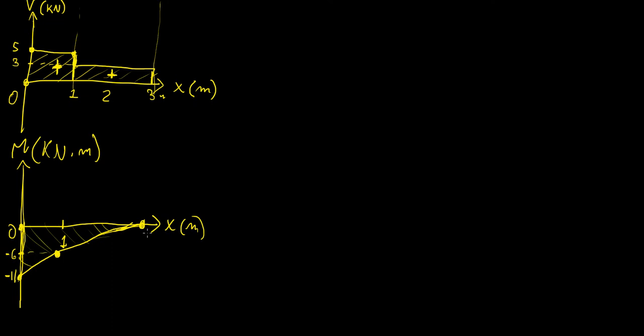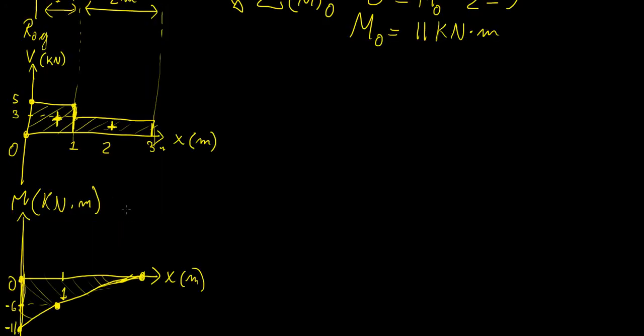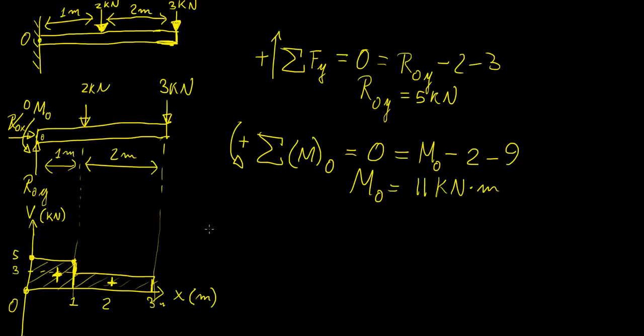And the important thing with these two diagrams is that at the very end, they should always come back to 0. Otherwise, your structure would not be in equilibrium, and it would actually be in motion. And in the next video, I'm going to show you how we can analyze systems involving distributed loads and other more complicated functions.